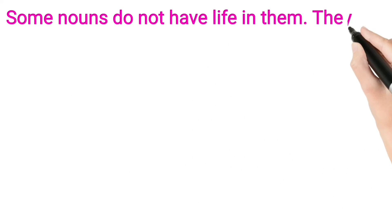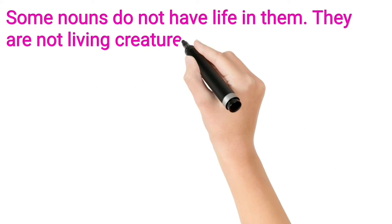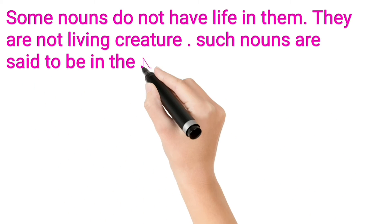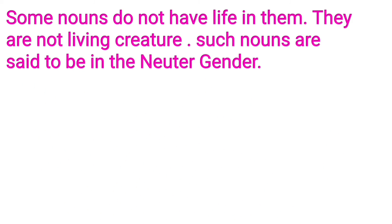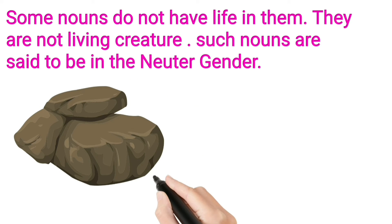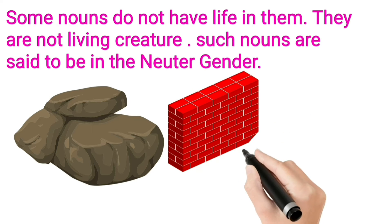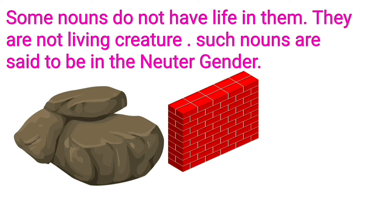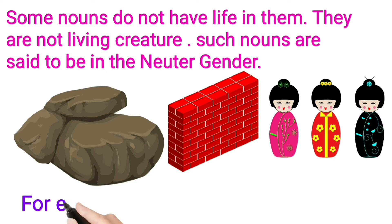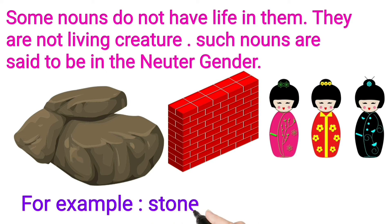Some nouns do not have life in them — they are not living creatures. Such nouns are said to be in the neuter gender. For example: Stone, Brick, Toy.